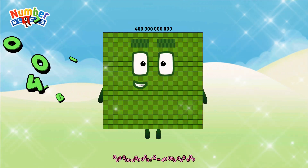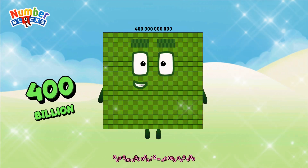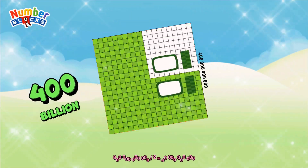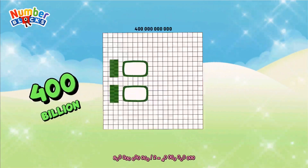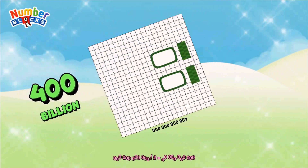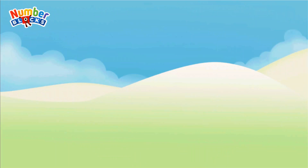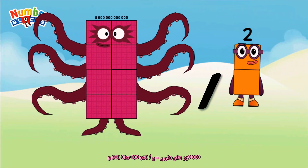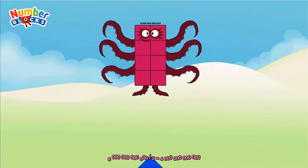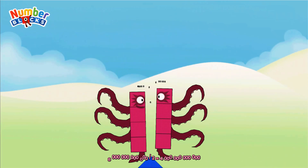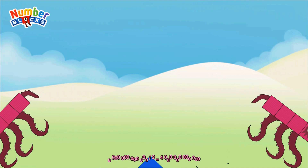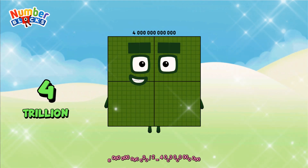Equals 100 Billion. 8 Trillion divided by 2 equals 1 Trillion.